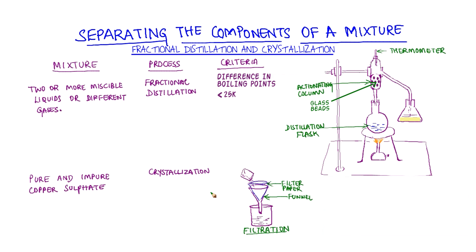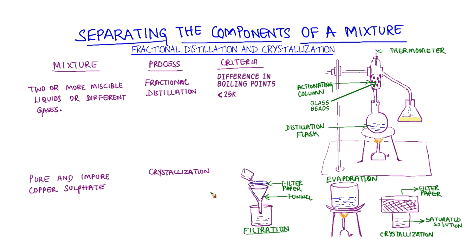The impure sample of copper sulphate is dissolved in a minimum amount of water and filtered to remove impurities. The solution is heated to get a saturated solution. This saturated solution is covered with filter paper and left undisturbed at room temperature to cool slowly. The pure copper sulphate then crystallizes and separates out.